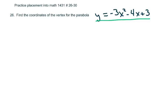So what I'm going to do is move, the way I do it is I move this 3 over, and then I'm going to factor out a negative 3, and I'm going to get an x squared plus 4 over 3x.